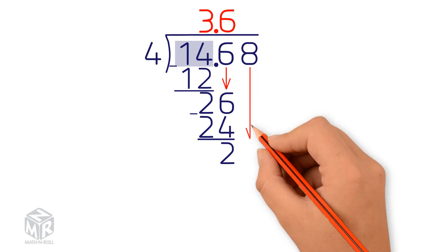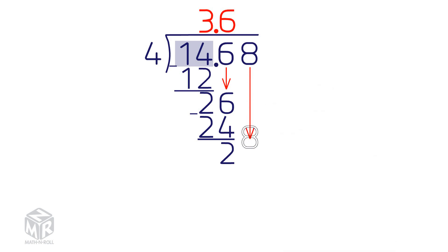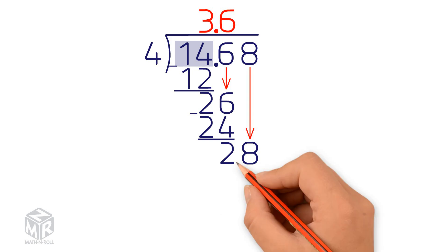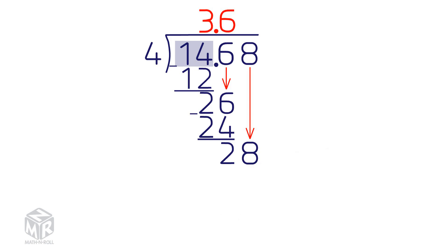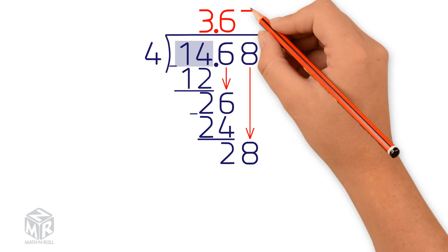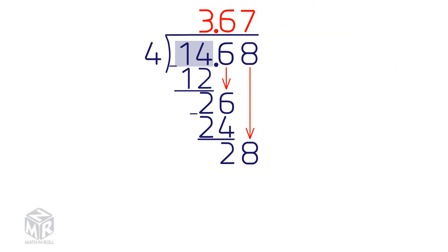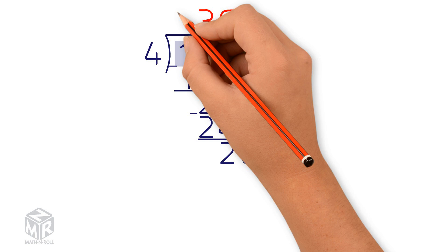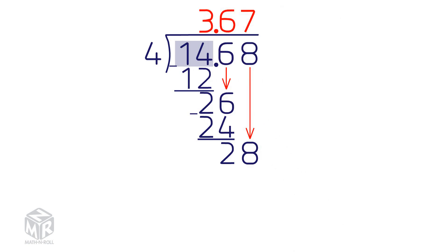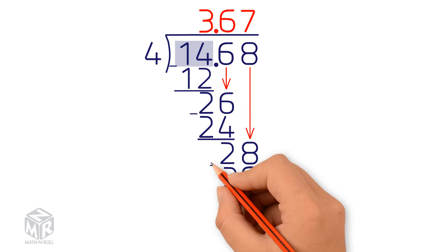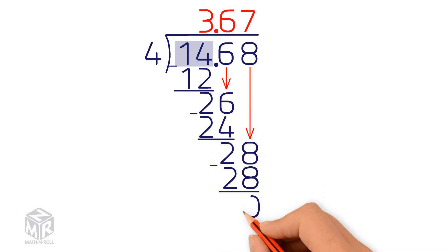Bring down the 8. 4 goes into 28 7 times, so we write the 7 directly above the 8. Now we multiply 4 times 7. We get 28, and we write it directly below the 28. Now we subtract and we get 0.